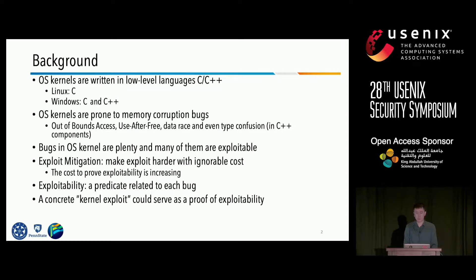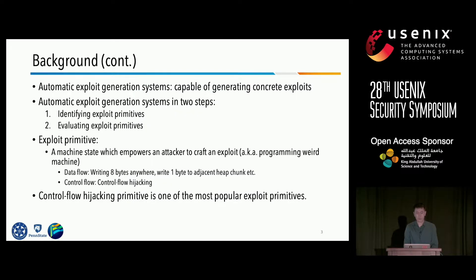To protect OS kernels, we have a lot of mitigations. Mitigation makes exploitation harder. Exploitability for each bug is predicated on whether and how easily it could be exploited under the constraints of a set of exploit mitigations. To get a good proof of exploitability, we need to give concrete kernel exploits, and we have automatic exploit generation systems to generate them.